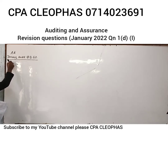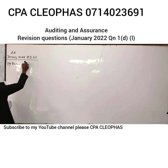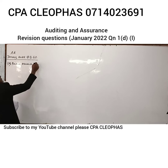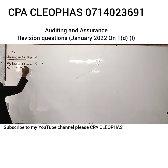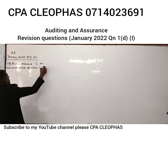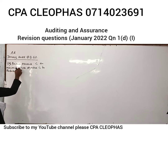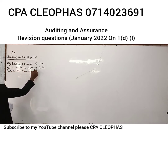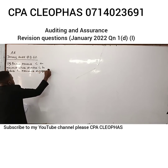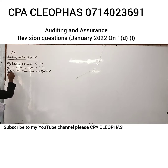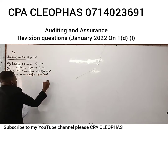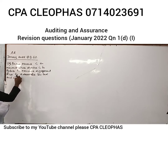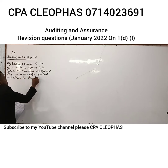One of the differences relates to the objective. Positive assurance has an objective to reduce the assurance engagement risk to a reasonably low level, where the risk is low.